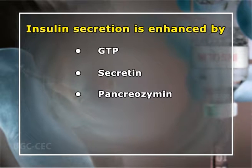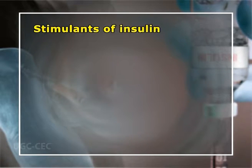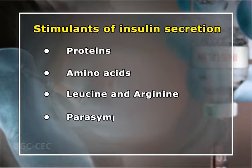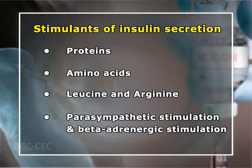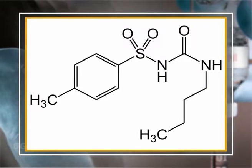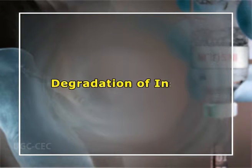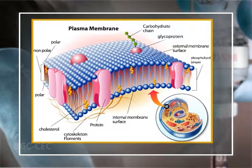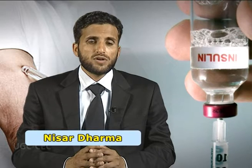Adenyl cyclase produces cyclic AMP, and this cyclic AMP along with calcium causes insulin secretion. Insulin secretion is enhanced by GIP, secretin, pancreozymin, gastrin, and glucagon. Other stimulants include proteins, amino acids (especially leucine and arginine), parasympathetic stimulation, and beta-adrenergic stimulation. Inhibition of secretion occurs following alpha-adrenergic stimulation and vagotomy. The drug tolbutamide will stimulate insulin secretion. Insulin is rapidly degraded by the liver; plasma half-life is less than five minutes. Insulin-specific protease insulinase and a hepatic glutathione-insulin transhydrogenase which cleaves the disulfide linkages are involved in degradation.